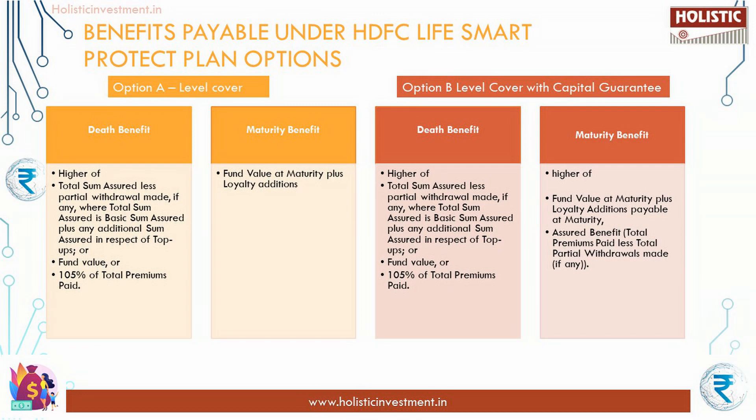Benefits payable under HDFC Life Smart Protect - Option A Level Cover: the death benefit is payable as a lump sum if the life assured dies during the policy term. The death benefit payable to the nominee shall be the highest of: total sum assured less partial withdrawals made, or fund value, or 105 percent of total premiums paid. On survival till maturity, the fund value at maturity plus loyalty additions payable at maturity shall be paid to the policyholder.